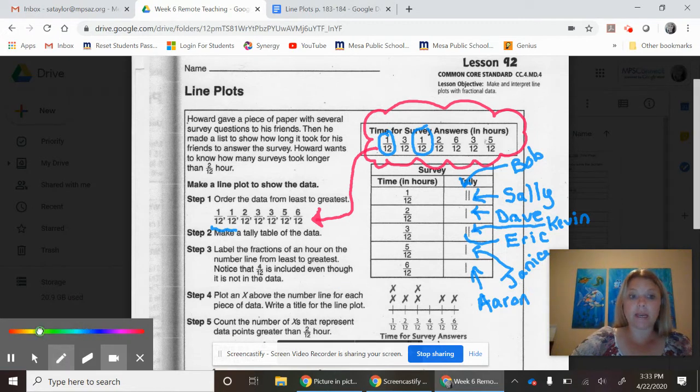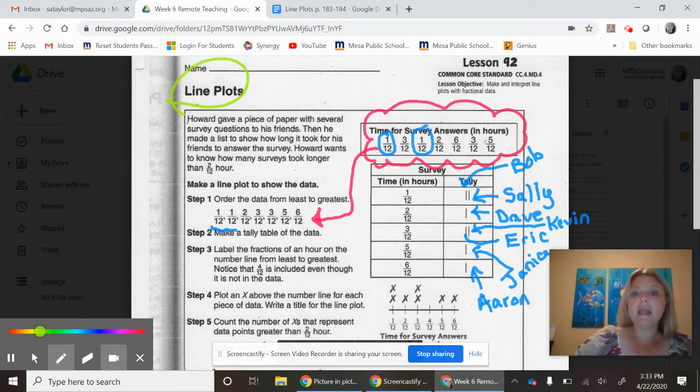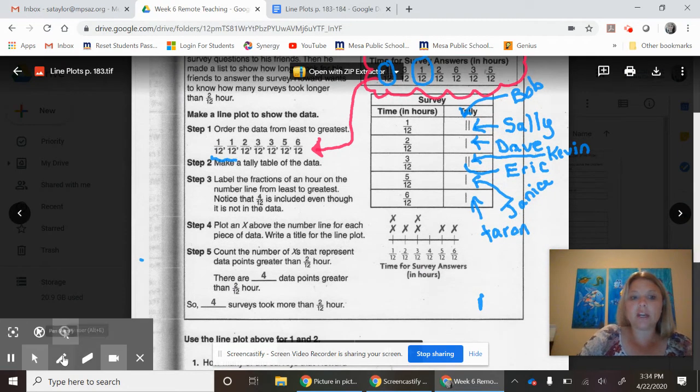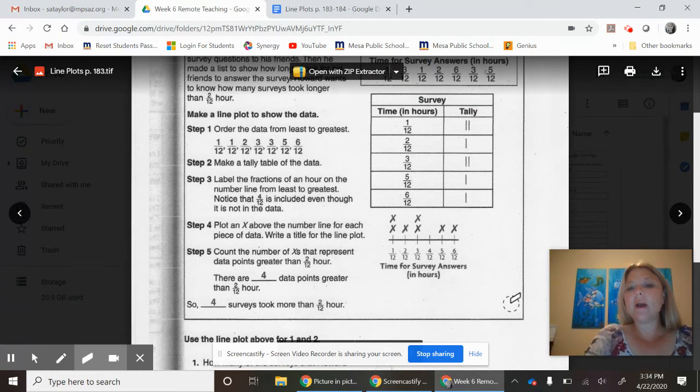Your whole objective, as you can recall, was to put it in a line plot. What exactly is a line plot? Well, a line plot is when you are going to put your information smallest to greatest on a line.